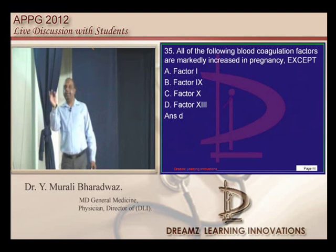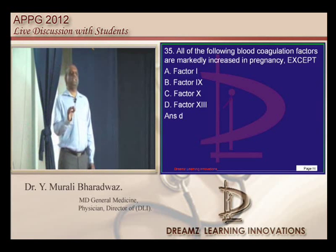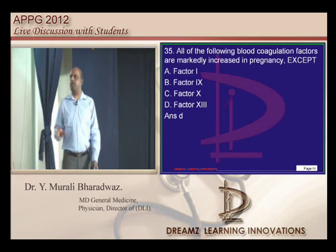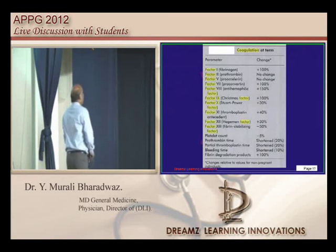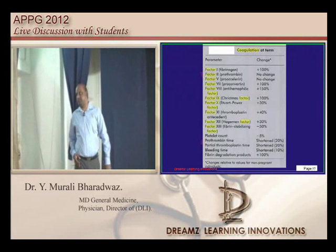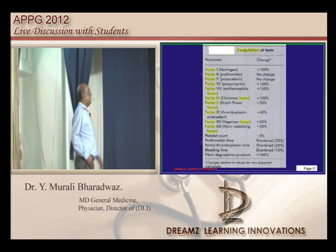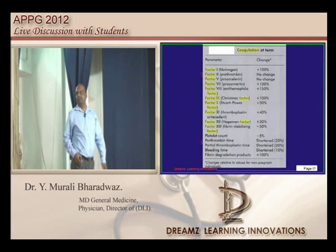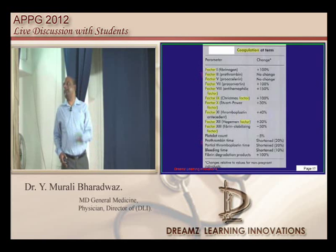Now, which coagulation factors are increased, decreased, and normal in pregnancy? Factor 1 will increase 100 percent over baseline. Factor 2 and Factor 5 do not change. Factor 13 and platelet count will decrease — Factor 13, the fibrin stabilizing factor, will decrease by about 50 percent. That is what the examiner is interested in. All other factors basically will increase.